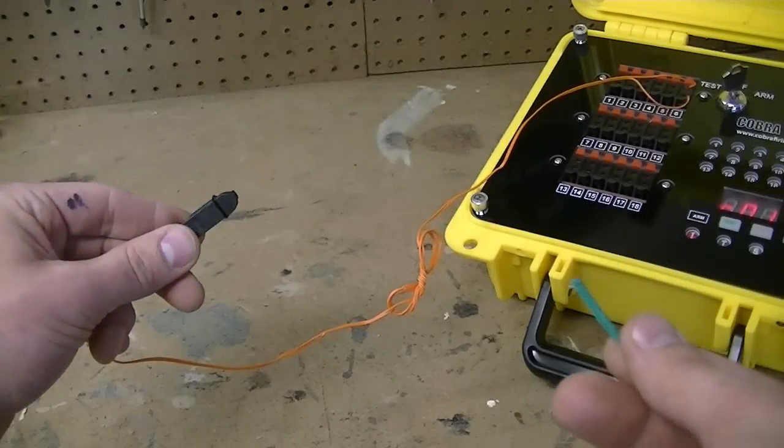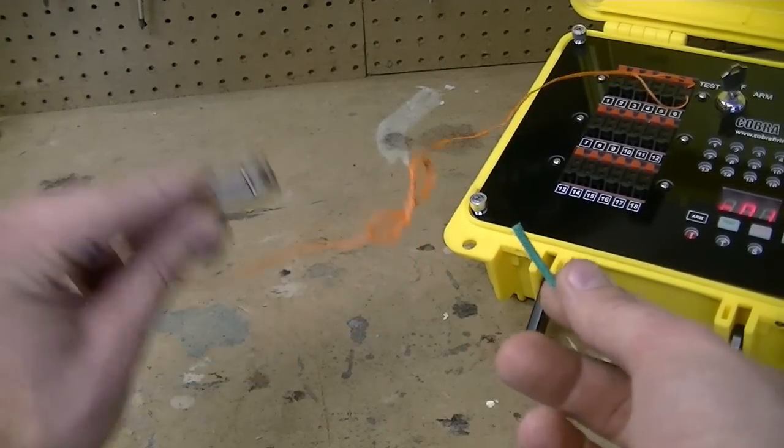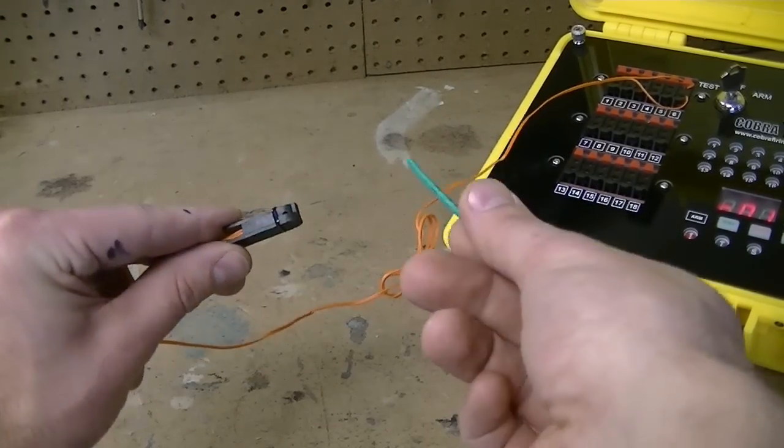Hello, this is Scott Smith from Cobra Firing Systems and I'm going to show you how to use a talon igniter clip to fire a standard VSCO fuse.